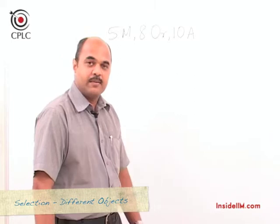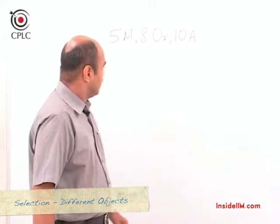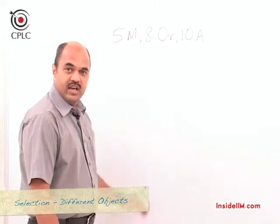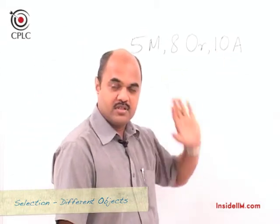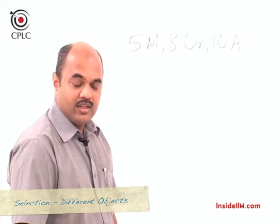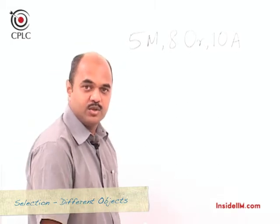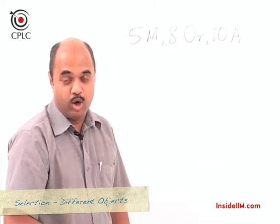Let's now look at some examples of different types of selection. The first one we're going to look at involves distinct objects. Let's look at this example where we have 5 mangoes, 8 oranges and 10 apples. Suppose the question asked is: given 5 mangoes, in how many ways can mangoes be selected? The most common answer to this question is 5C5, which is one way, or 5C1, which is 5 ways.